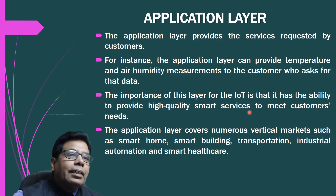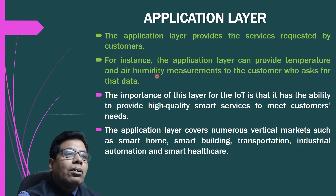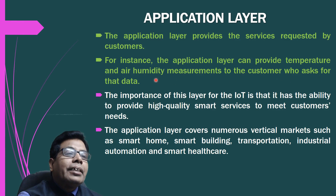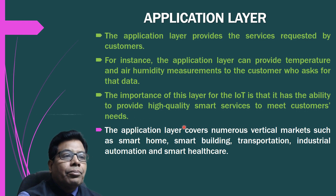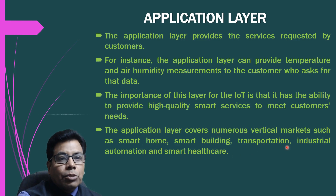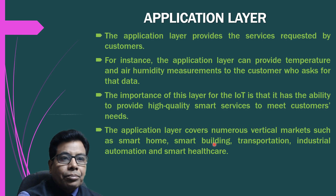The application layer provides services requested by customers depending on the applications. For instance, it can provide temperature and air humidity measurements to the customer who asks for the data. The importance of this layer for IoT is its ability to provide high-quality smart services to meet customer needs. The application layer covers numerous vertical markets such as smart home, smart building, transportation, industrial automation, and smart healthcare.